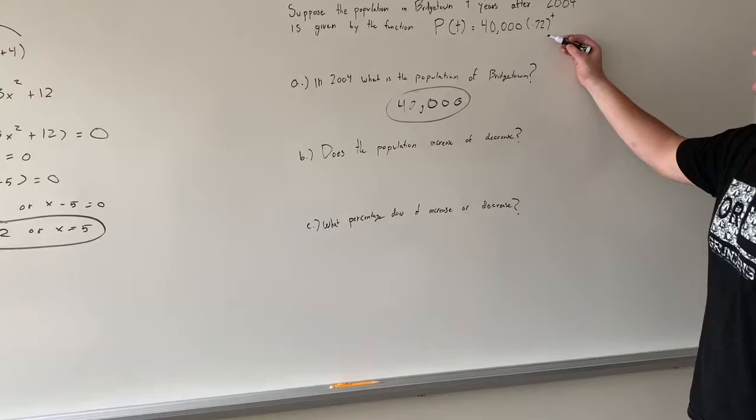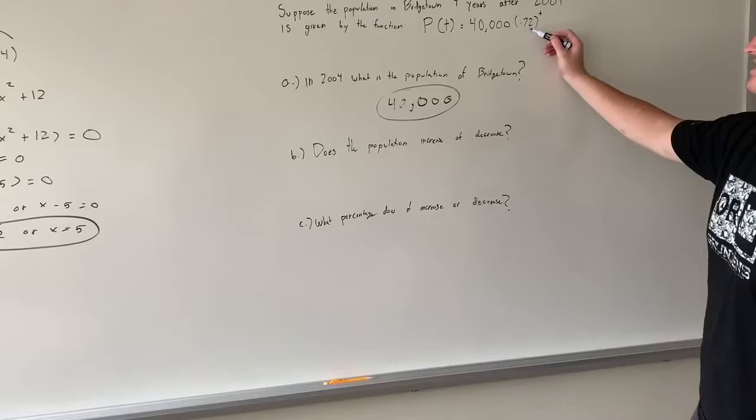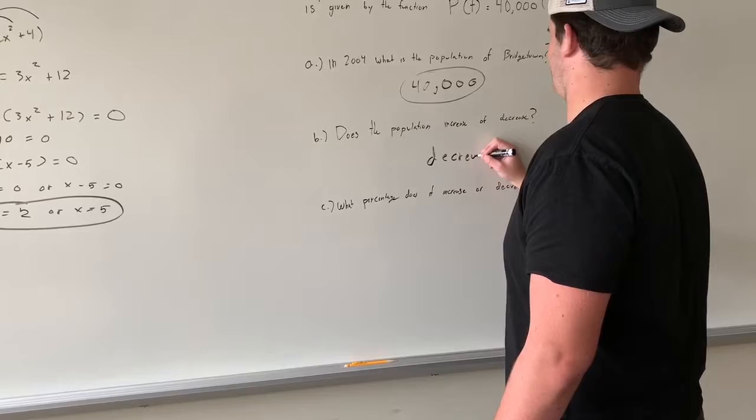And for B, does the population increase or decrease? And as you can see here, it's decreasing, because it's a decimal point, 0.72, so it will be decreased.